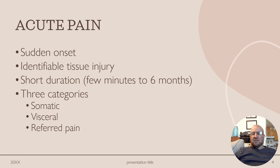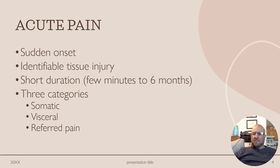Somatic pain is usually the result of injury or damage to somatic structures and is often felt at or near the site of injury. Visceral pain refers to pain that originates from the internal organs such as the heart, lungs, stomach, liver, or intestines. It is often described as a deep, dull, or aching pain that is less well-defined and can be challenging to localize. Visceral pain occurs when internal organs stretch.